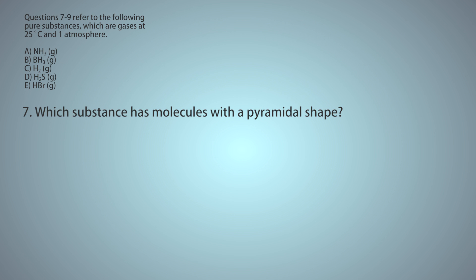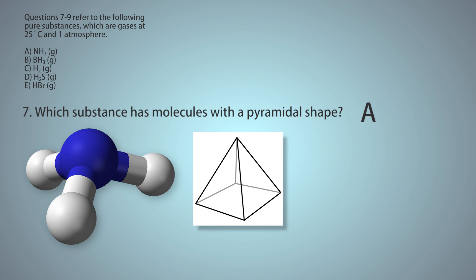Question 7. Which substance has molecules with a pyramidal shape? You might say pyramidal. Either is fine. This is A, NH3.